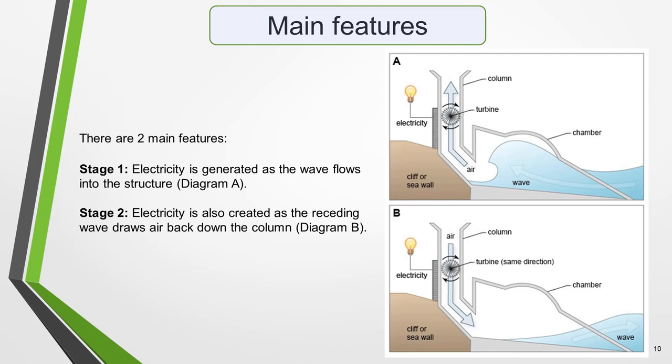So what main features stand out in our practice graphic? The graphic doesn't contain very much detail, and there are only two stages to the process. Stage 1: Electricity is generated as the wave flows into the structure, as in diagram A. And Stage 2: Electricity is also created as the receding wave draws air back down the column, that's in diagram B.